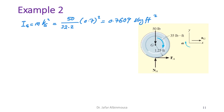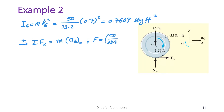Taking rightward as positive, the sum of forces along x equals m·a_G. The only horizontal force is friction, so: f = (50/32.2)·a_G. This is equation one.